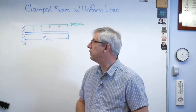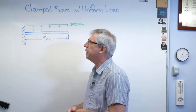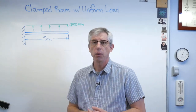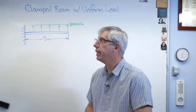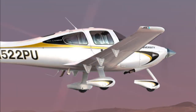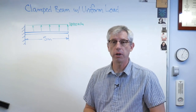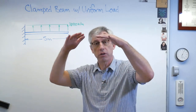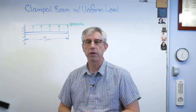Before we get too far along, what is this really? What's a physical example? Well, Purdue University, where I am right now, has a flight program — we train commercial pilots — so there's all these little white airplanes flying around. Aerodynamic loads on a wing are distributed loads. Now they're not exactly uniform, but they're close enough. We can think about this like an airplane wing: there's low pressure on top and high pressure below, so it pushes the plane upwards.